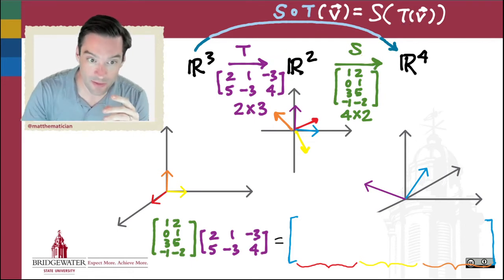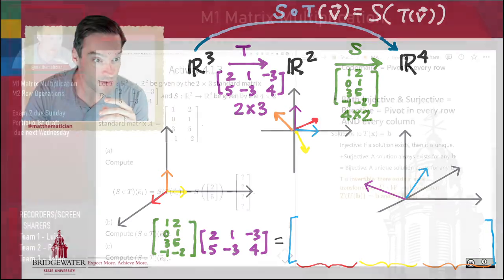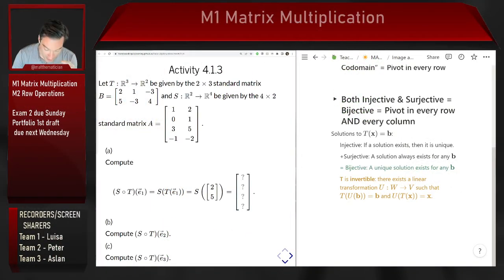The way you did that in this example was by directly finding the results of S composed with T applied to each of the three standard basis vectors of R³. Then those, by definition of standard matrix, become the columns of the standard matrix for their composition.